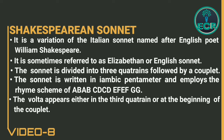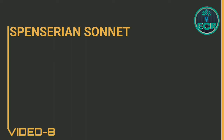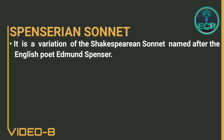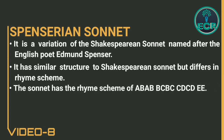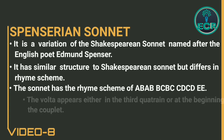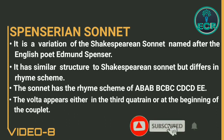Then we have the Spenserian sonnet. It is a variation of the Shakespearean sonnet named after the English poet Edmund Spenser. It has a similar structure to the Shakespearean sonnet but differs in rhyme scheme. The sonnet has a rhyme scheme of ABAB BCBC CDCD EE. The Volta appears either in the third quatrain or at the beginning of the couplet.